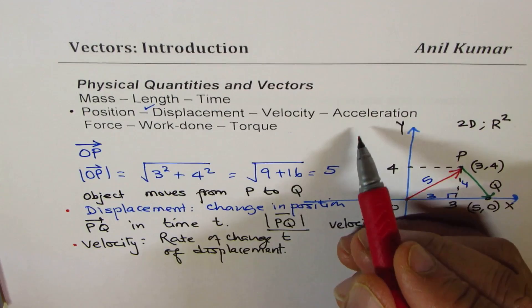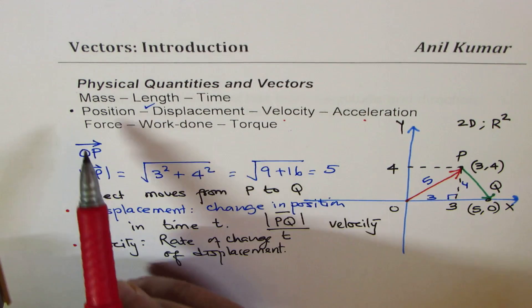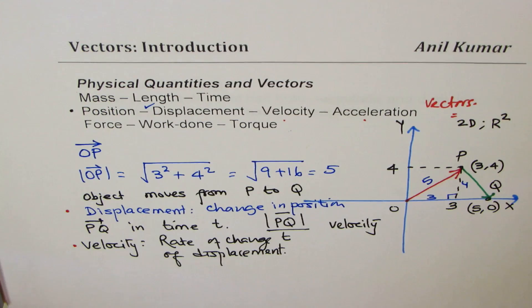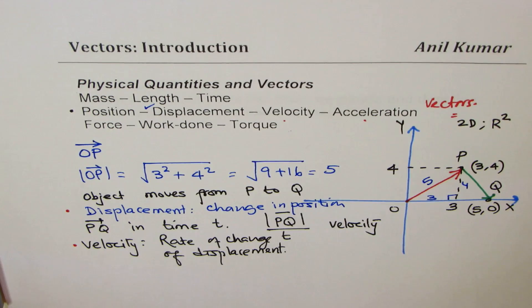Acceleration is actually the rate of change of velocity. I hope all these things are clear — they are very much related. All of them will be treated as vectors, and we will see why and how. All have direction and magnitude. But it's too early to say that fully — we'll understand it in just a minute.